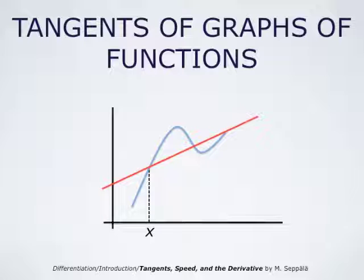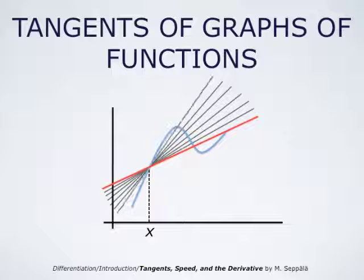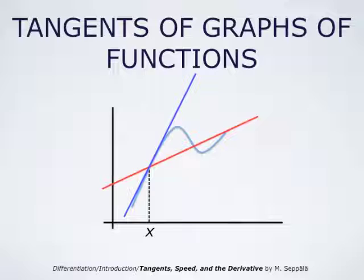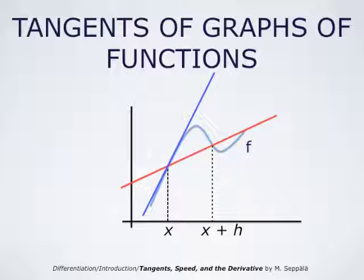Then we let this secant line rotate around the point (x, f(x)) until it becomes a tangent line. So we take a limiting process of the slope of the secant line and we get to the slope of the tangent line. Our desire is to compute the slope of the blue tangent line. To do that we start with this secant line indicated here, and we have intersection points at (x, f(x)) and at some other point (x+h, f(x+h)).